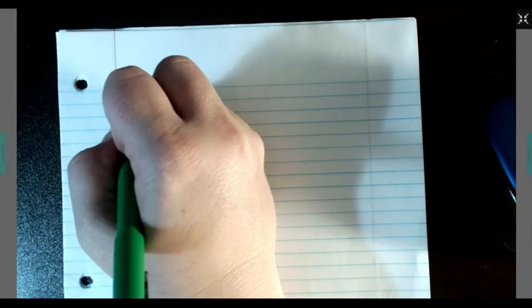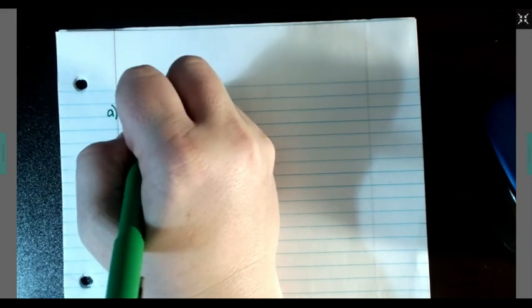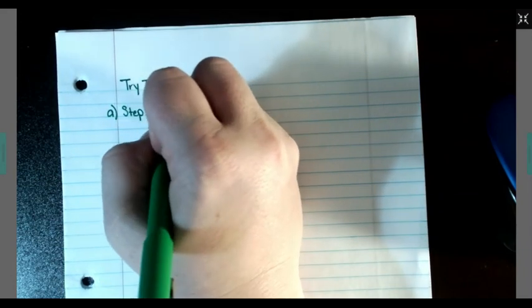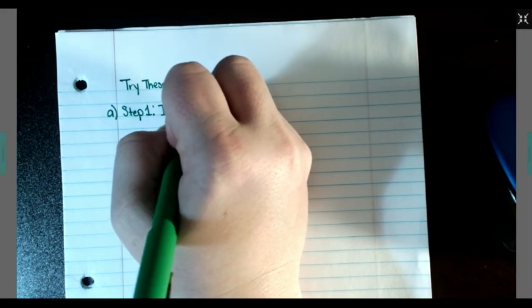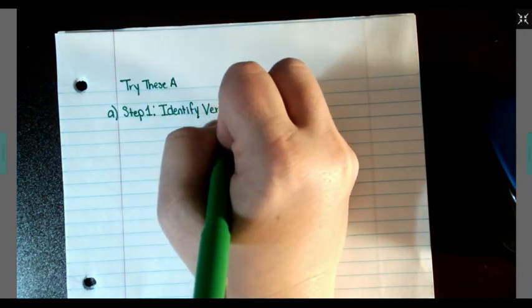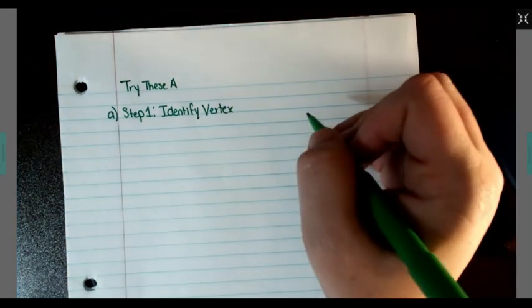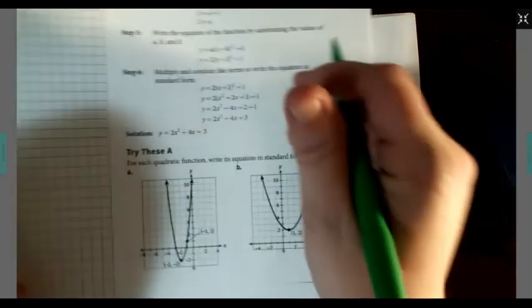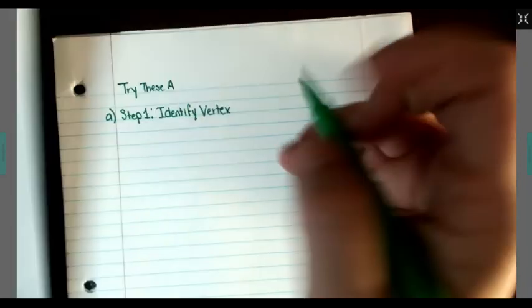Step 1 says identify your vertex. In this case my vertex is negative 2, negative 2.